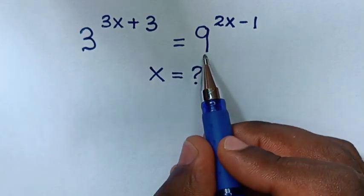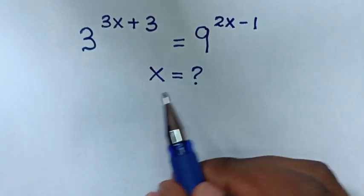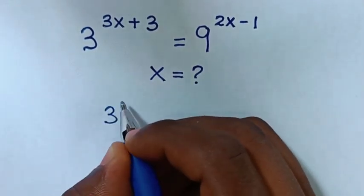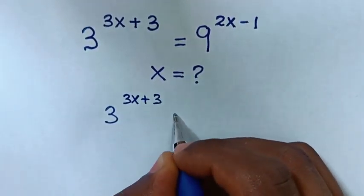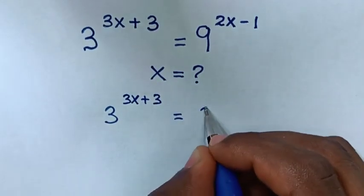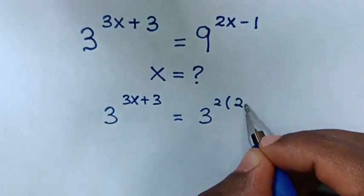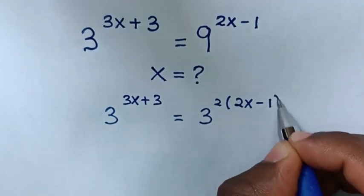So first, we change this base of 9 to have base of 3 same as this one. So our equation will be 3 power of 3x plus 3 is equal to 9 is same as 3 square, then bracket power of 2x minus 1.